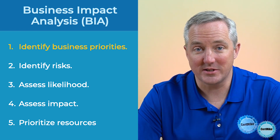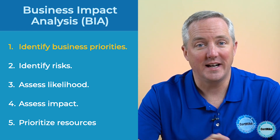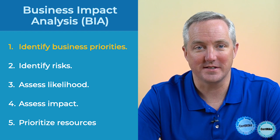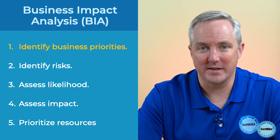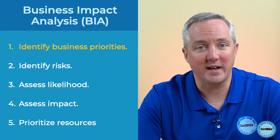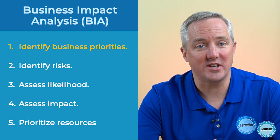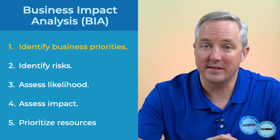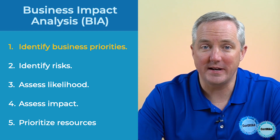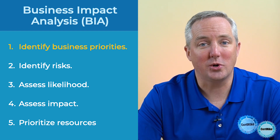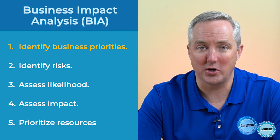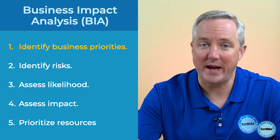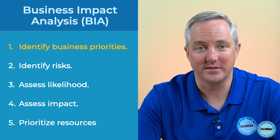Let's begin with step one: identifying business priorities. Depending on your line of business, certain activities are essential to your day-to-day operations. In the first step of the BIA, you create a comprehensive list of critical business functions, and then you rank them in order of importance.